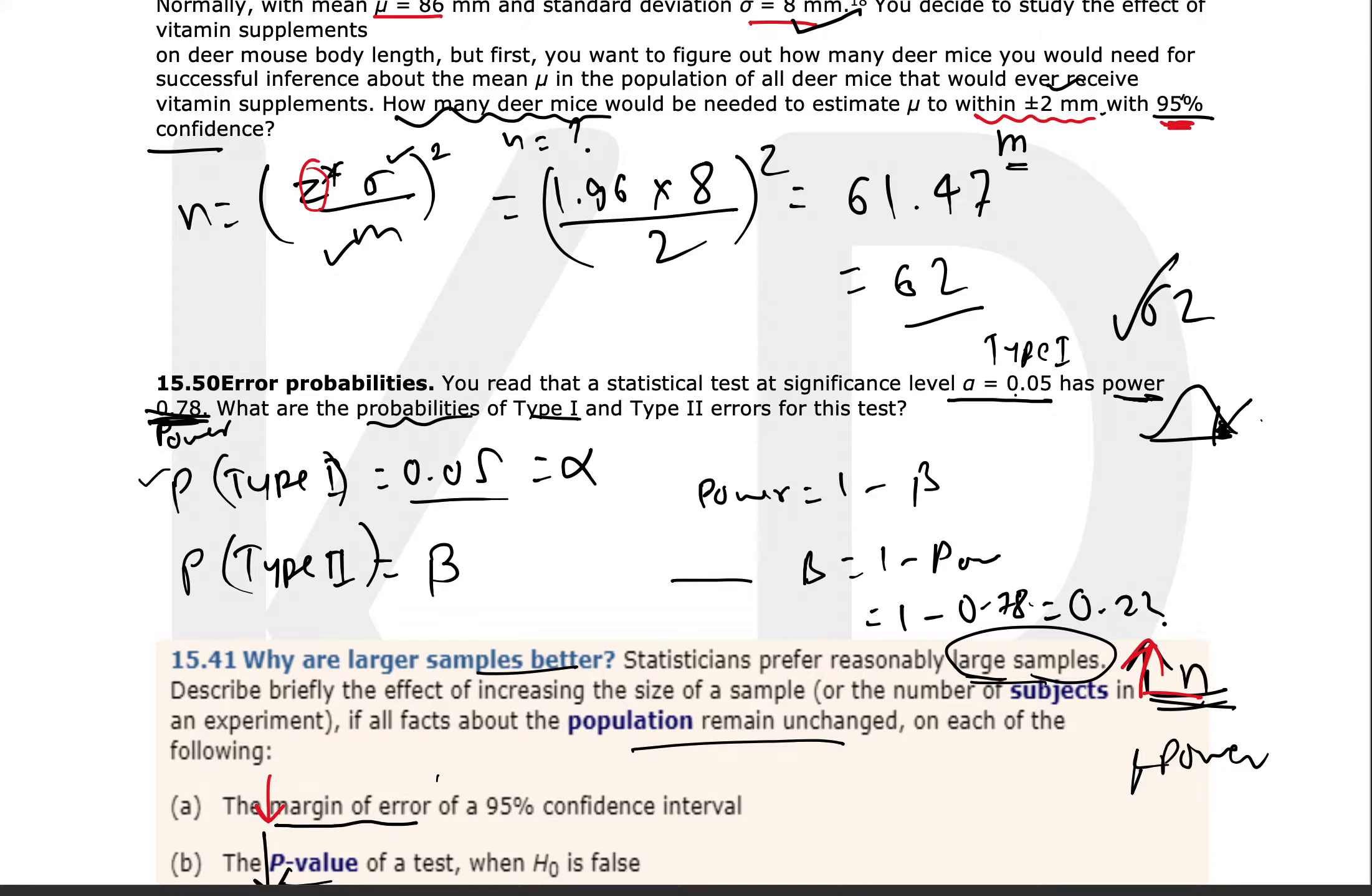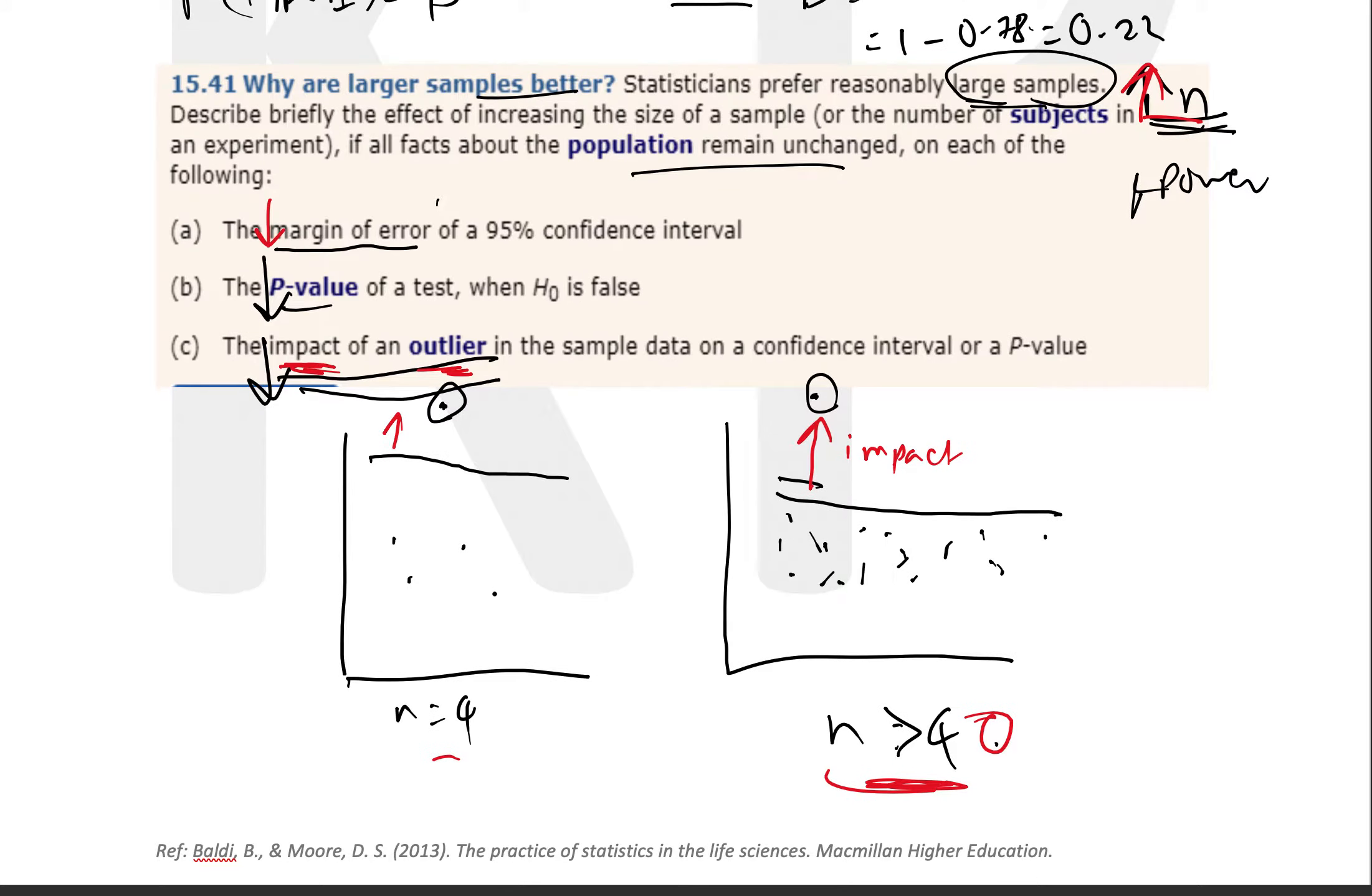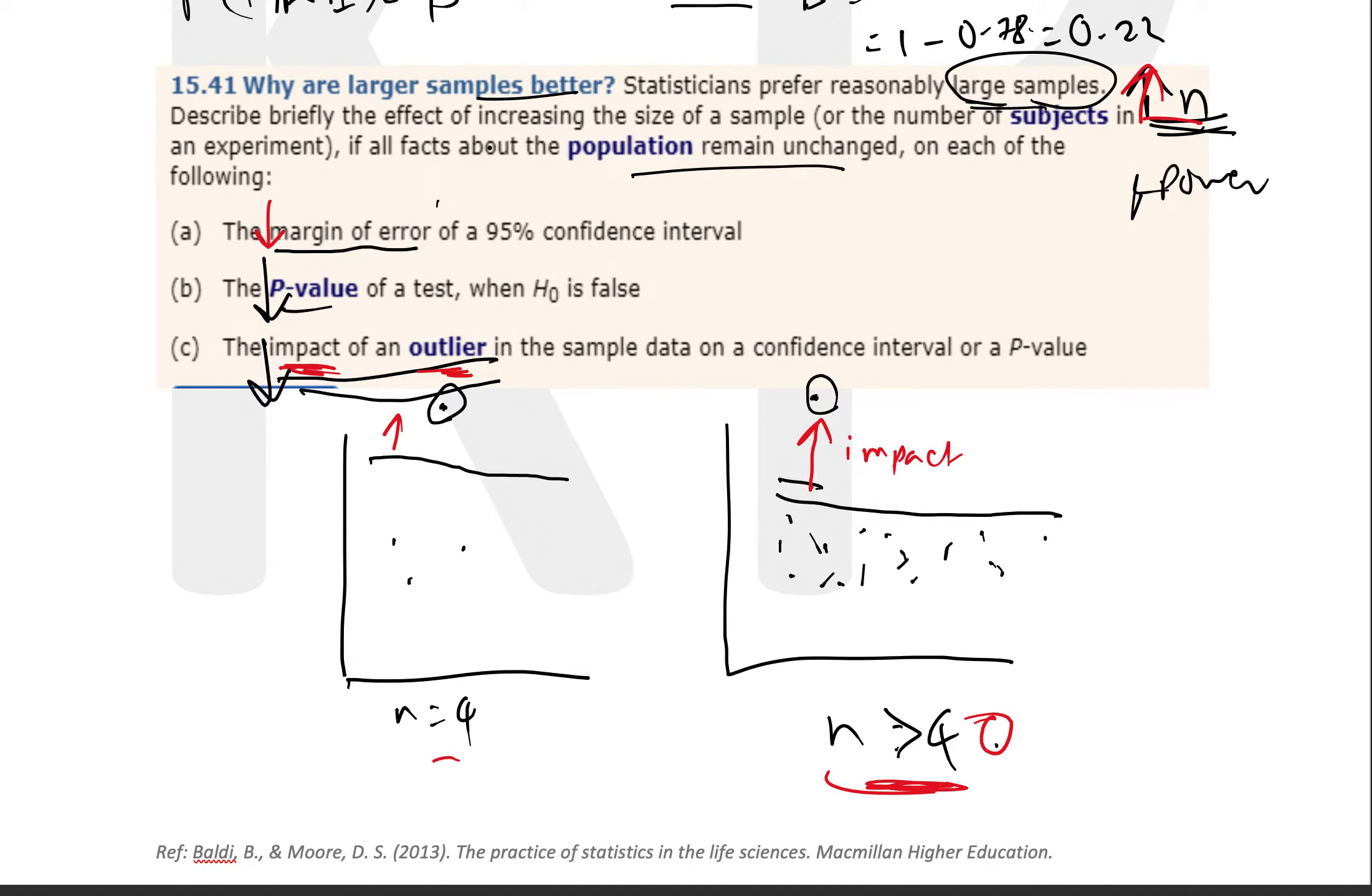Now the last question is looking at sample size and the correlation—how the other three things are going to affect these things. So if we have reasonably large samples, or as the sample size increases, what is going to happen to these things?